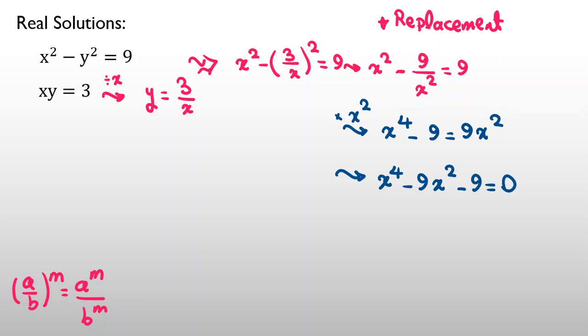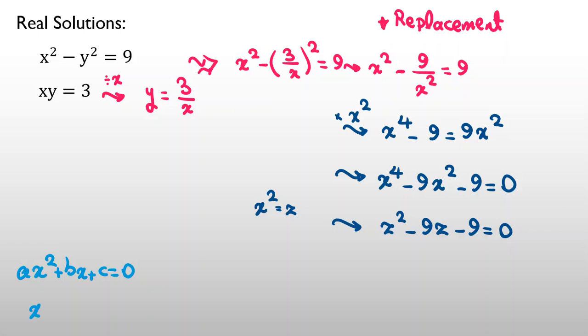It will be x to the 4 minus 9 x squared minus 9, equal to 0. Now, I consider x squared as z. I can write, x to the 4 will be z squared minus 9z minus 9, equal to 0. Now, we want to use quadratic formula for solving this.